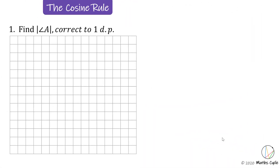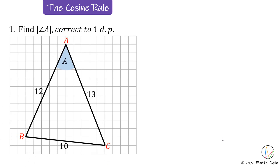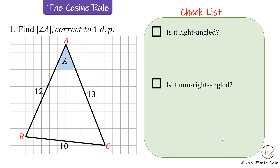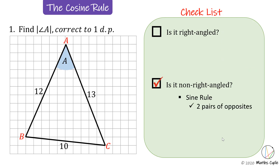Question one: find the measure of the angle A, correct to one decimal place. Let's go through our checklist. Is it a right-angle triangle where we use sine, cosine, tan or Pythagoras? There's no right angle there, so it's not one of those — it's a non-right-angle triangle. Now, can I use the sine rule?